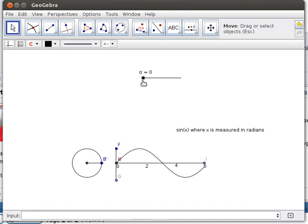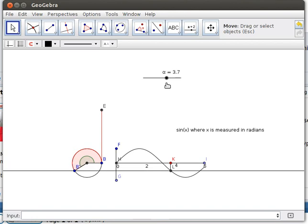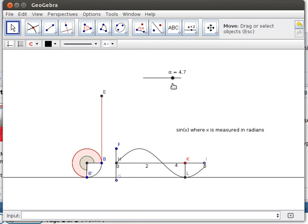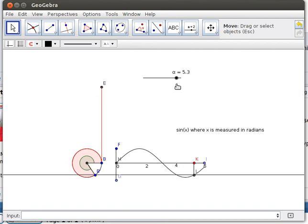Notice that we start out at 0. Then as alpha increases, that y value increases until we get to pi over 2 to around 90 degrees. And then the y value starts to get smaller and smaller until we get out there to pi radians or 180 degrees. And then the y value becomes negative for a while until we get down to a negative 1 at 270 degrees.